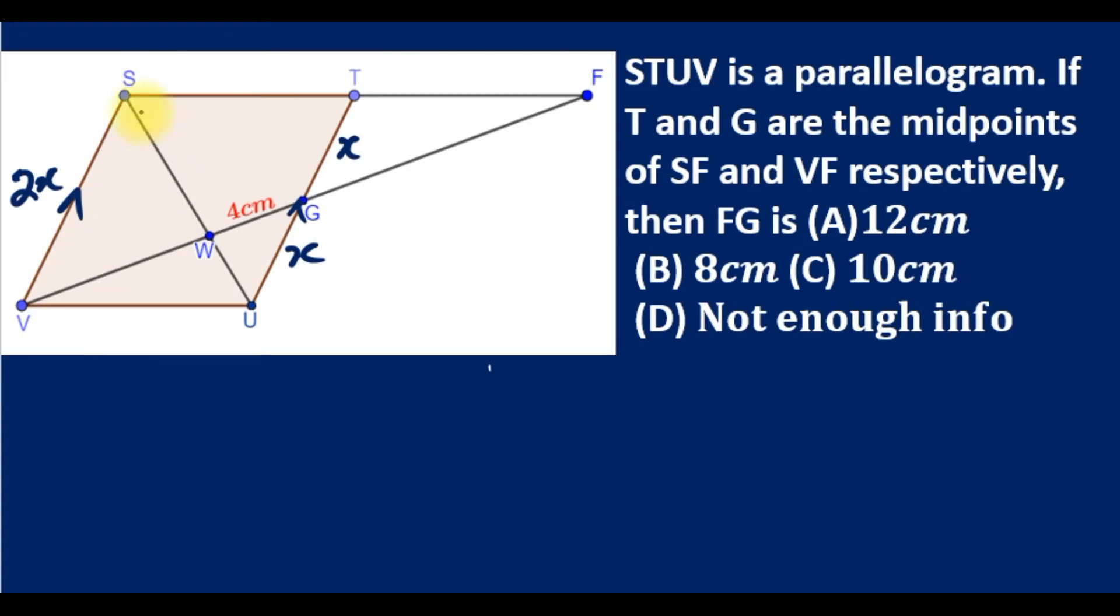This is a parallel line, so this uses the transversal, making this angle equal to this angle by alternate angle theorem. This angle corresponds to this corresponding angle, and this in turn by vertical opposite angles. So we have two similar triangles.